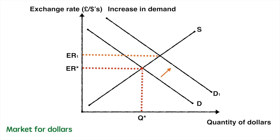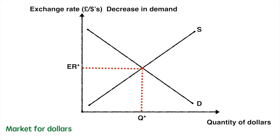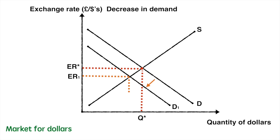This will also cause an increase in the equilibrium quantity of US dollars in the foreign exchange market. Now suppose there is a decrease in interest rates offered by American financial institutions for depositors. This will reduce the demand of US dollars by British investors as the US is now less attractive to invest in relative to other countries or even the UK itself. This reduction in the demand for the dollar causes it to depreciate and the equilibrium quantity exchanged to decrease.